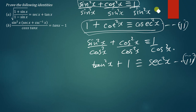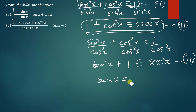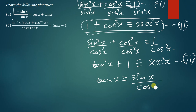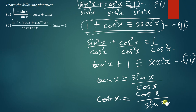There are also other trig identities that are already established, like the identity for tan: tan x is simply equal to sin x over cos x. Then we also have cot x, which is simply equal to cos x over sin x — or equivalently written as 1 over tan x.